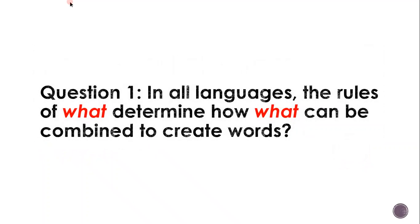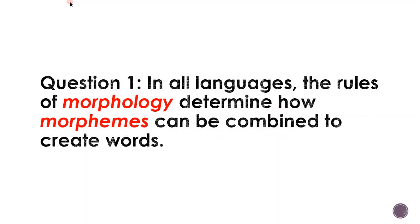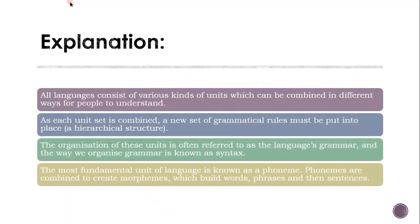Question 1. In all languages, the rules that determine how morphemes can be combined to create words — the answer is morphology and morphemes. All languages consist of various kinds of units which can be combined in different ways for people to understand. As each unit set is combined, a new set of grammatical rules must be put into place — a hierarchical structure.